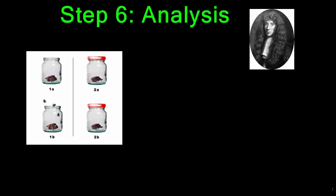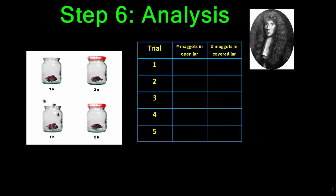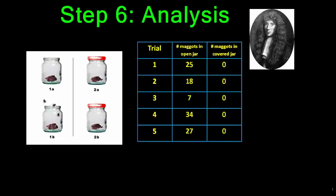Quantitative data is often represented in a table. Redi's table might have looked like this: he might have had five jars that were open and five jars with a cover to keep the flies out. He would count the number of maggots in the open jars and the covered jars and record his data. As you can see, there are a number of maggots in each of the experimental groups and zero maggots in the control group — the jar with the cover.